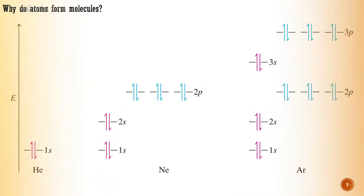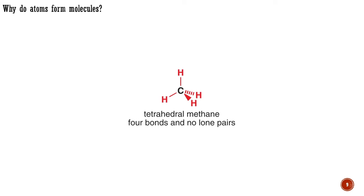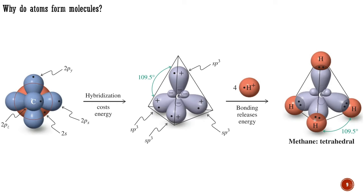First of all, we need to consider why atoms form molecules at all. Some atoms, inert gases for example, do so only with extreme reluctance, but the vast majority of atoms in the periodic table are much more stable in molecules than as free atoms. Here, for example, is methane, four hydrogen atoms arranged around a carbon in the shape of a tetrahedron.